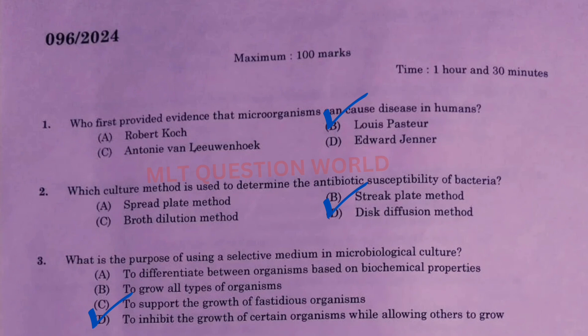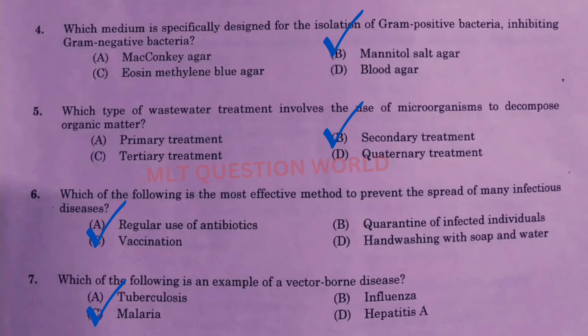Third question: What is the purpose of using a selective medium in microbiological culture? The right answer is option D: to inhibit the growth of certain organisms while allowing others to grow. Next question: Which medium is specially designed for the isolation of gram-positive bacteria inhibiting gram-negative bacteria? Answer is option B, Mannitol salt agar.